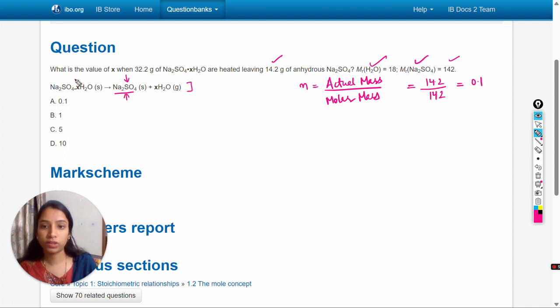So if the number of moles of Na2SO4 are 0.1, then for this moiety also, the number of moles are 0.1. By using this formula, we can calculate the molar mass of this moiety because the number of moles will be 0.1 and actual mass is given.